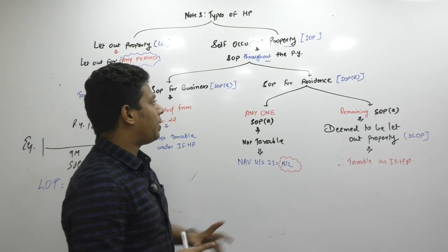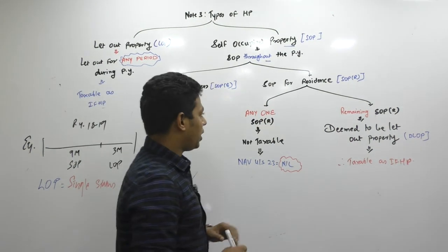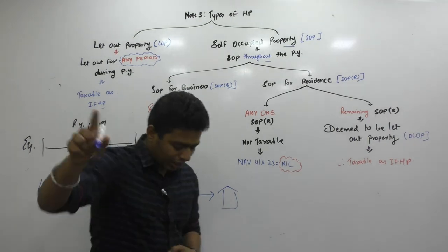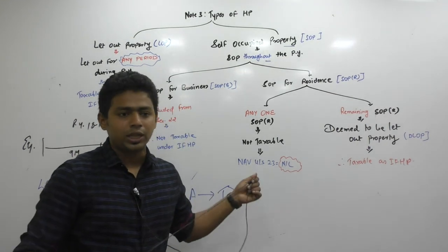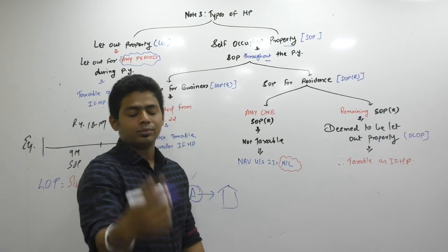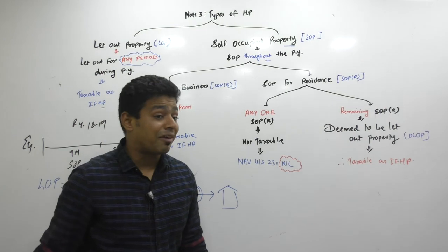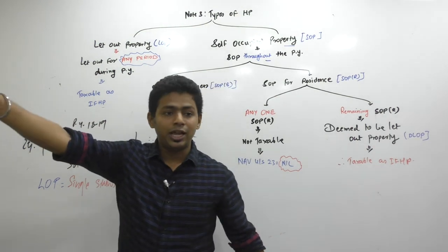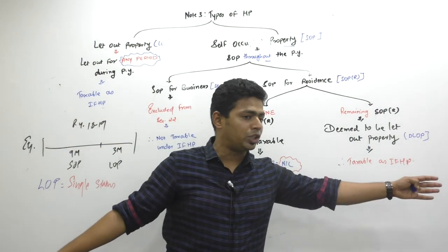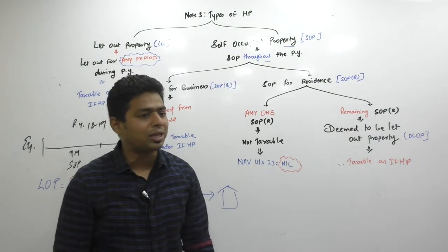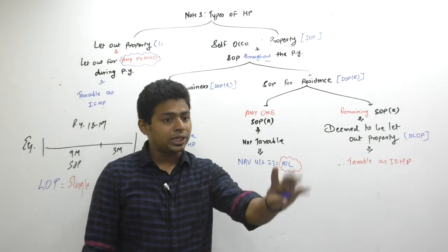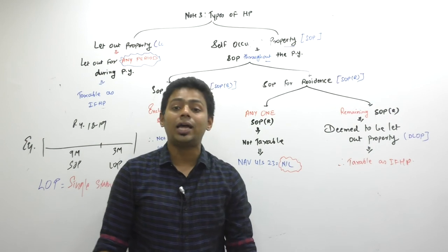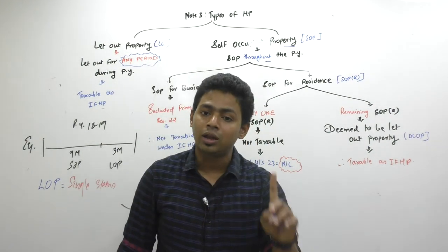What property will become taxable here? SOPR — self-occupied for residence. Every assessee deserves at least one house property. I did not say every person deserves one house. There are four members in a family — husband, wife, and two children — but there is only one assessee. I said one assessee deserves one house, minimum.